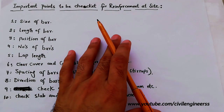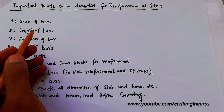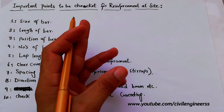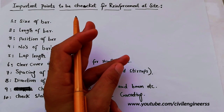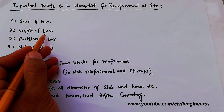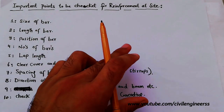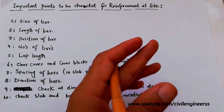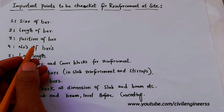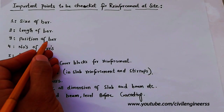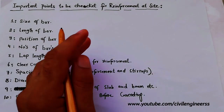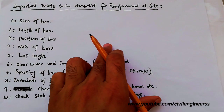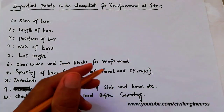Second, the length of bar should be checked for main bar and also distribution bar. The length of bar should be checked before placing steel on slab, beam, etc. After that, check the position of bar — is the position of bar okay or not as per the drawing.